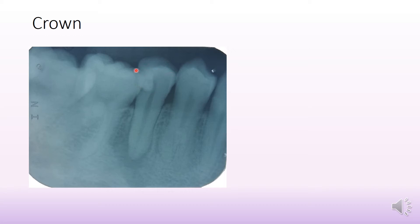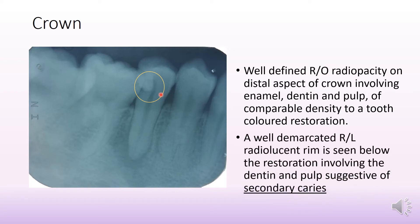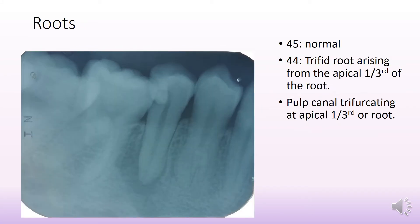Coming to the crown of the tooth, what is evidently visible is that in this area we see radio-opacity as well as radiolucency. There is a well-defined radio-opacity on the distal aspect of the crown involving enamel, dentine, and pulp, which is of comparable density to a tooth-colored restoration. Below the restoration we see a well-demarcated radiolucent rim, also involving dentine and pulp, which is suggestive of secondary caries.